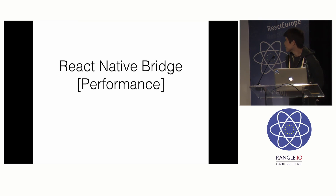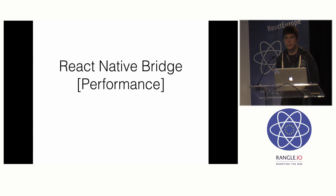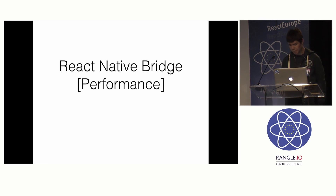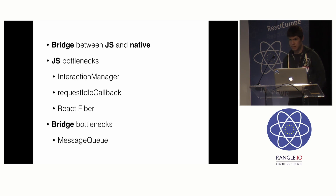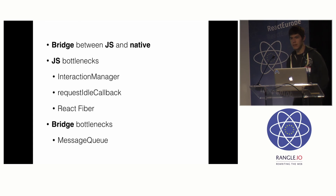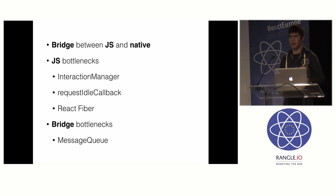Good morning, everyone. I'm going to start off talking about some of the architecture behind React Native and how the multi-threading and the different performance bottlenecks work. This will give you some of the foundation for content we're going to cover in the later sessions today. React Native has a bridge between JavaScript and Native, and on both sides of the bridge there can be performance bottlenecks, and the bridge itself can also have performance bottlenecks.